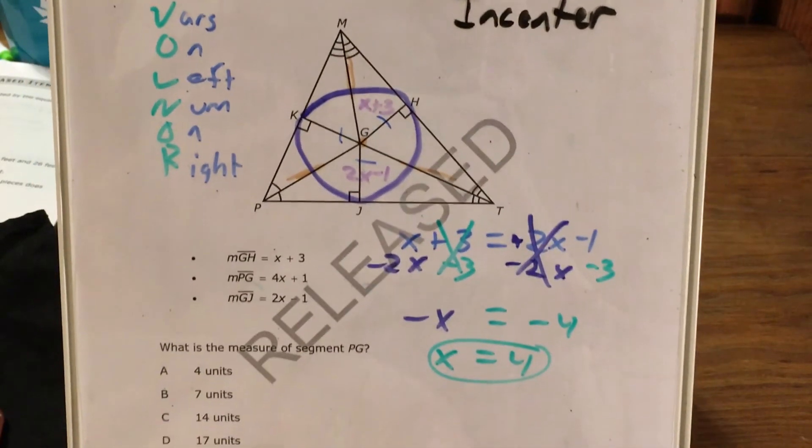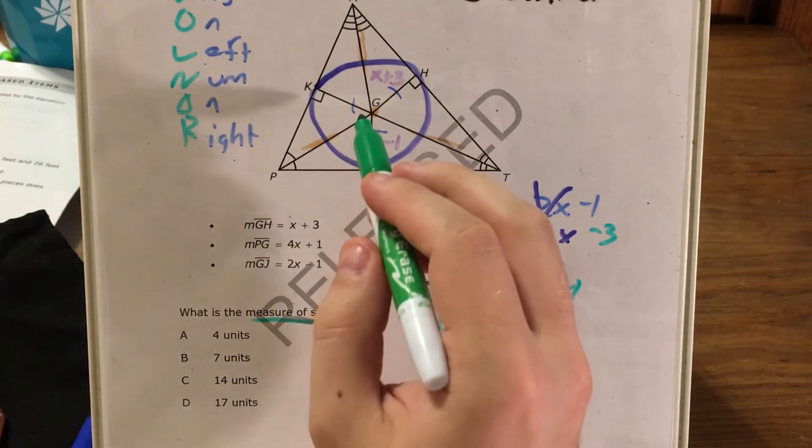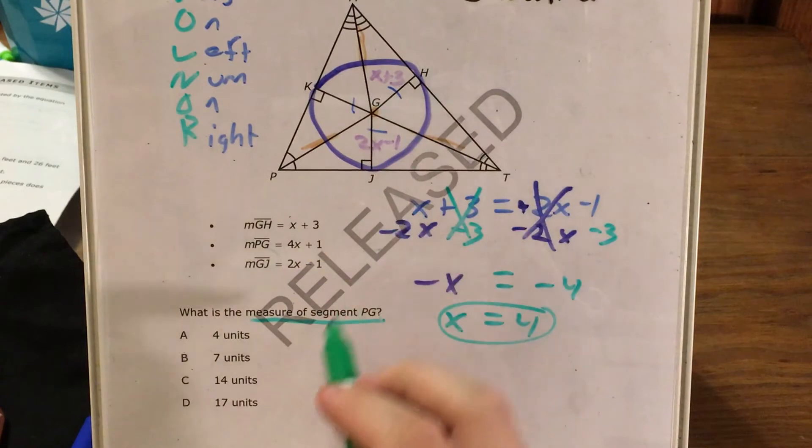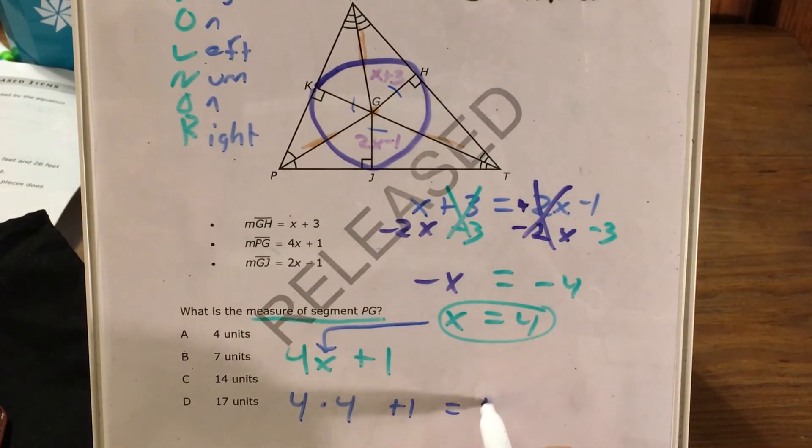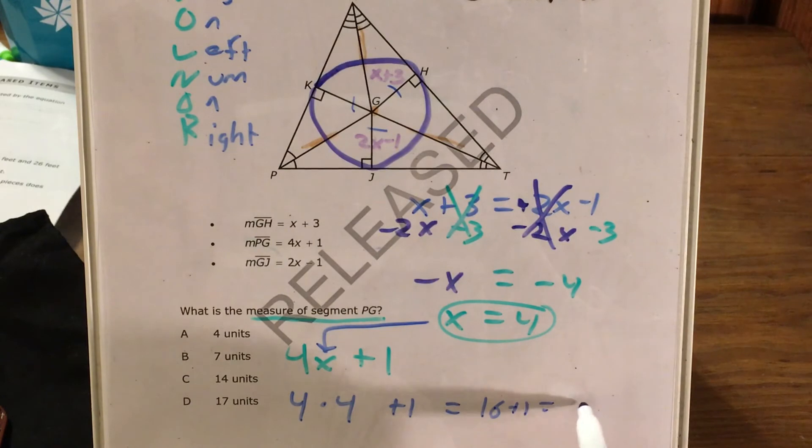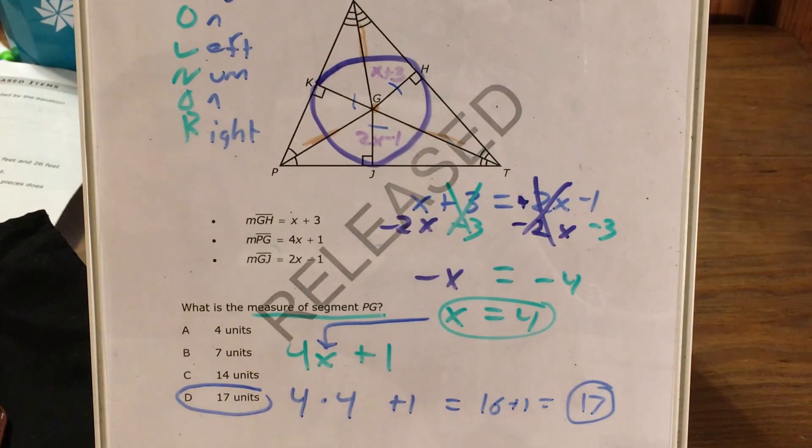And now I want to go back to the actual question, because we were trying to find the measure of segment PG. And PG was not one of the congruent ones that we found, but we did see that its expression was 4x plus 1. And in order to figure out its length now, I just need to take 4 and plug it in for x, giving me instead of 4 times x, 4 times 4 plus 1, also known as 16 plus 1, which is 17 units. And that matches choice D.